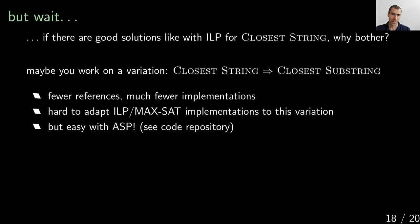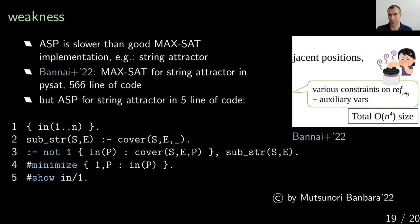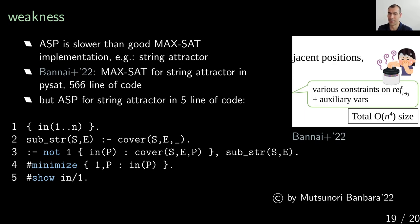In the end I have to tell you about some weaknesses of ASP: it's much slower than good MaxSAT implementations. For instance, we tested for string attractors and showed an implementation in MaxSAT last year, but it took 566 lines of code in Python with a specific library and was too technical — for the presentation we had to hide what's actually going on. On the other hand, you can write just 5 lines of ASP code for solving string attractors, but it's not as efficient as the MaxSAT solution.